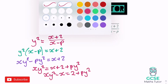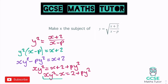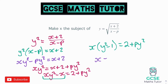And then we can actually finish this off by factorising this left-hand side. So we get x brackets y squared minus 1, so it's 1x, equals 2 plus py squared. Then we can finish this off just like all the others, dividing by that bracket. So x equals 2 plus py squared over y squared minus 1. And there's our final answer.